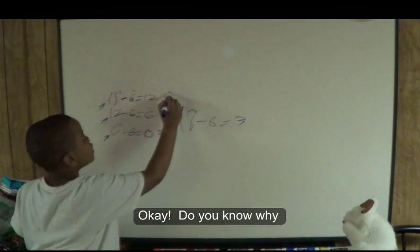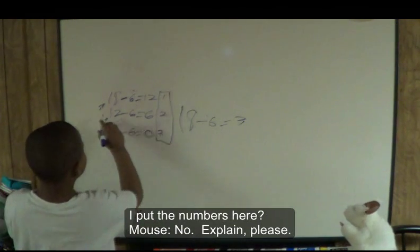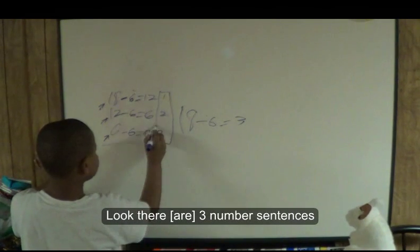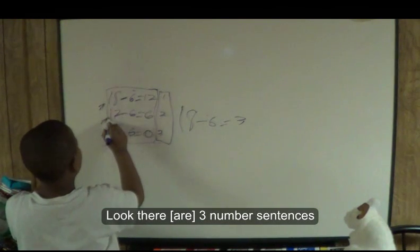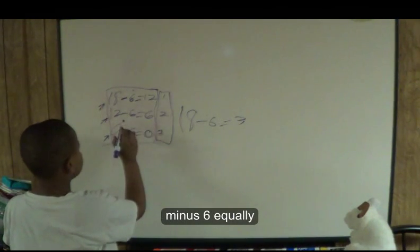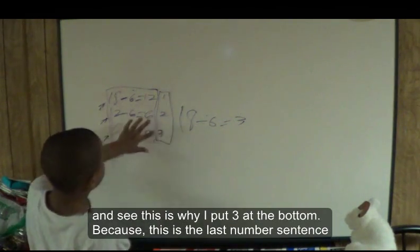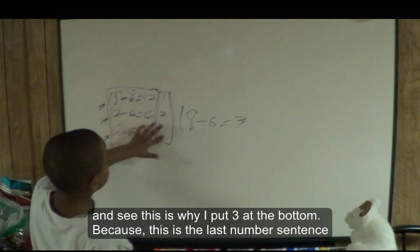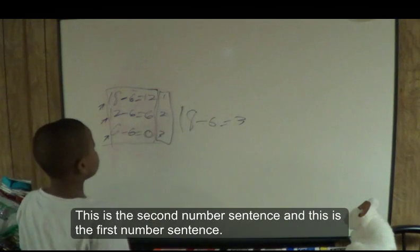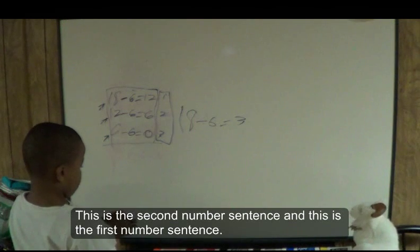Do you know why I put the numbers here? No. Explain, please. Because, see, there's three number sentences and they all minus six equally. And, see, this is why I put three at the bottom, because this is the last number sentence. This is the second number sentence, but this is the first number sentence. Okay. I think I get it. Thank you, Crystal.